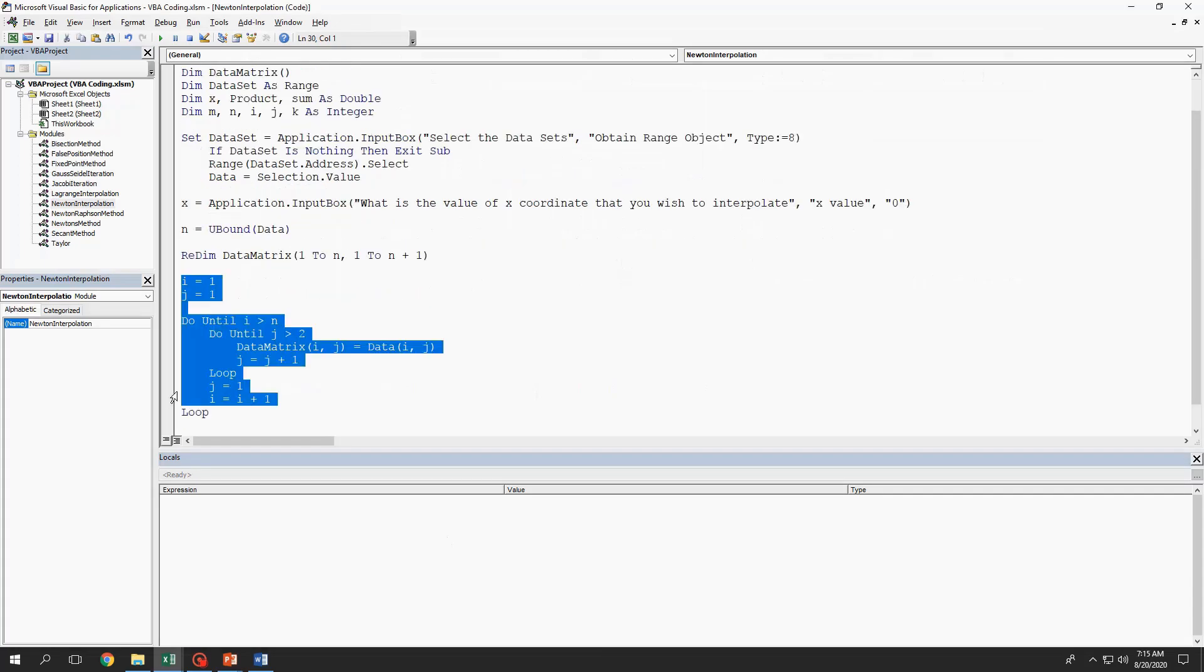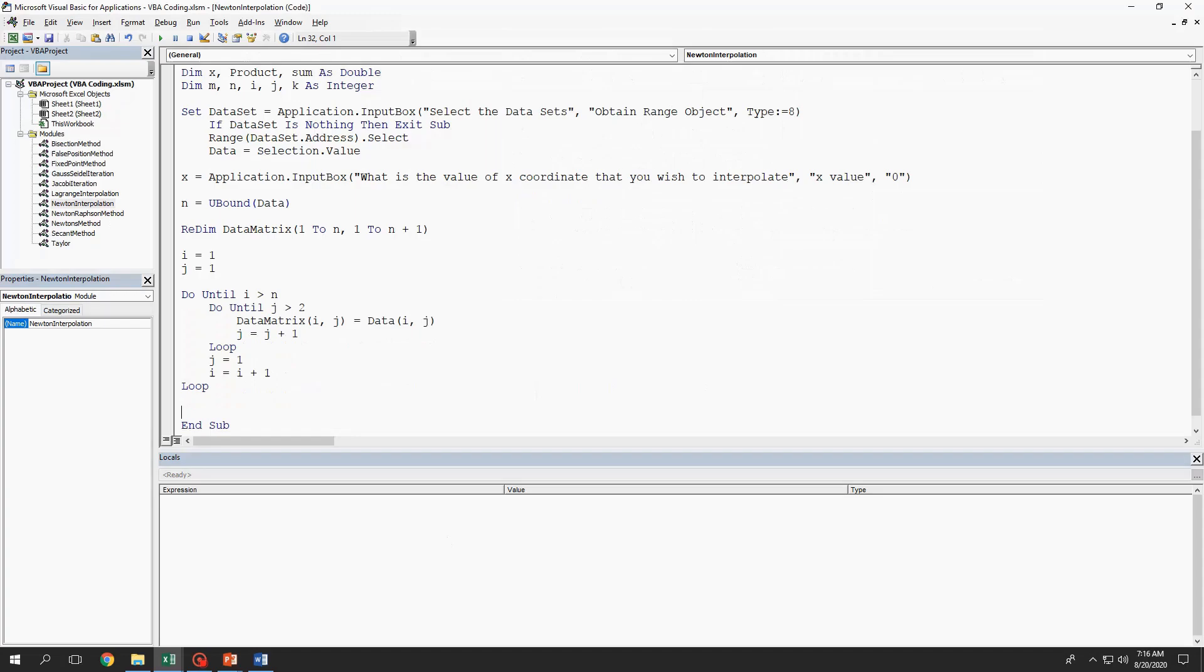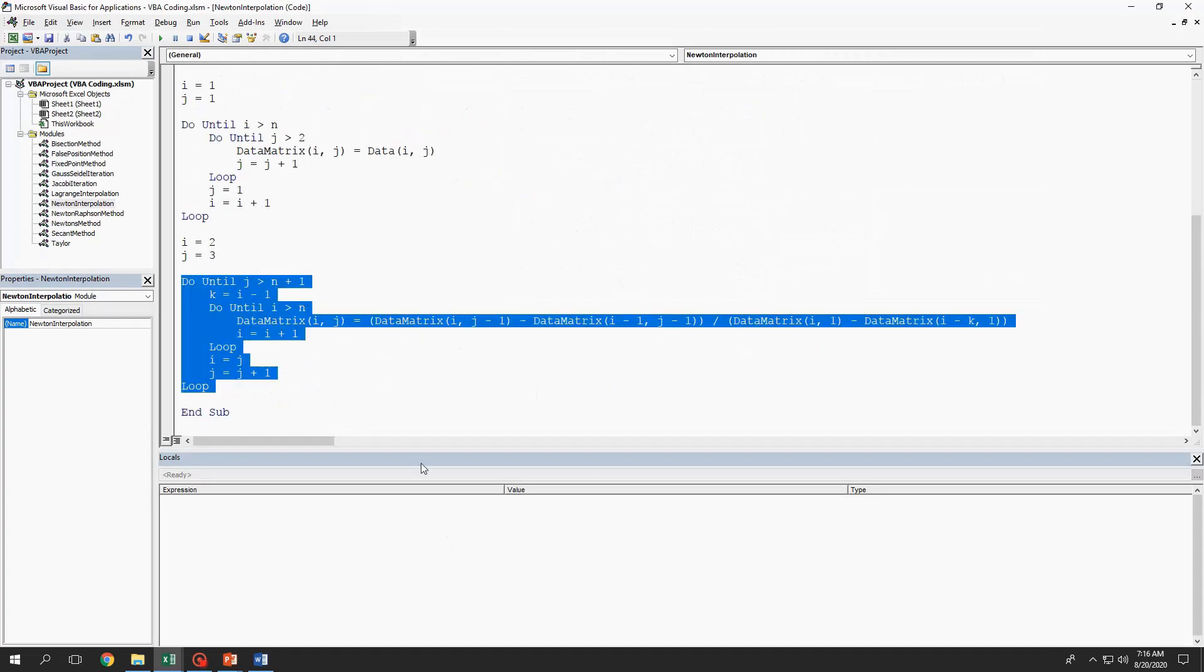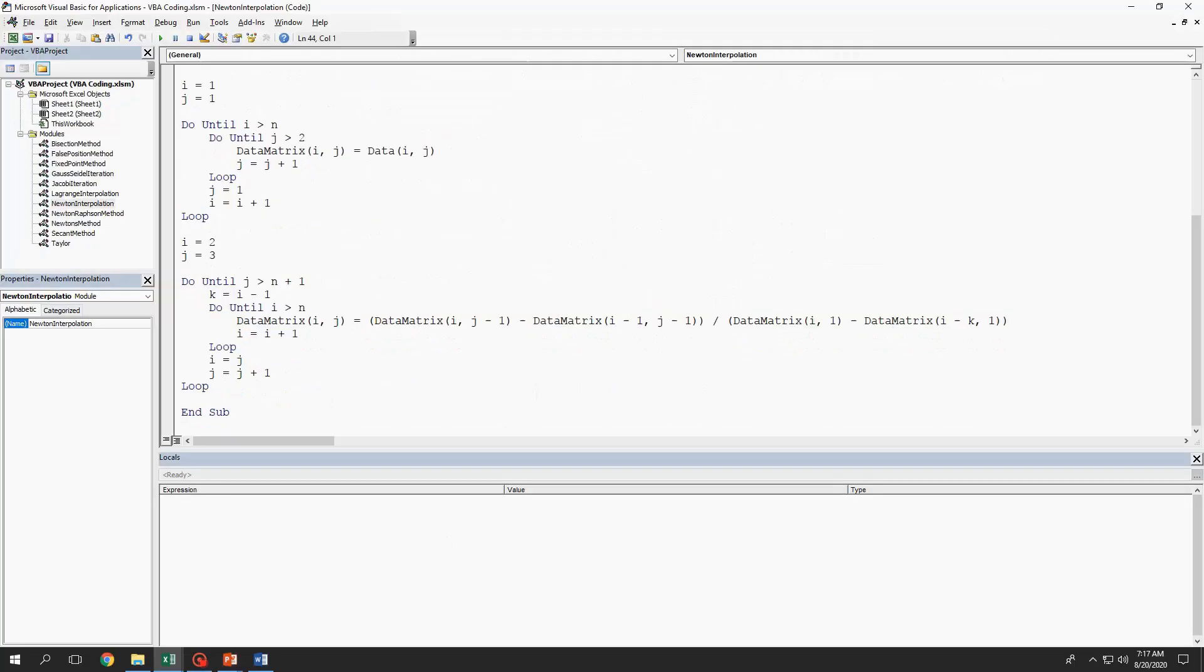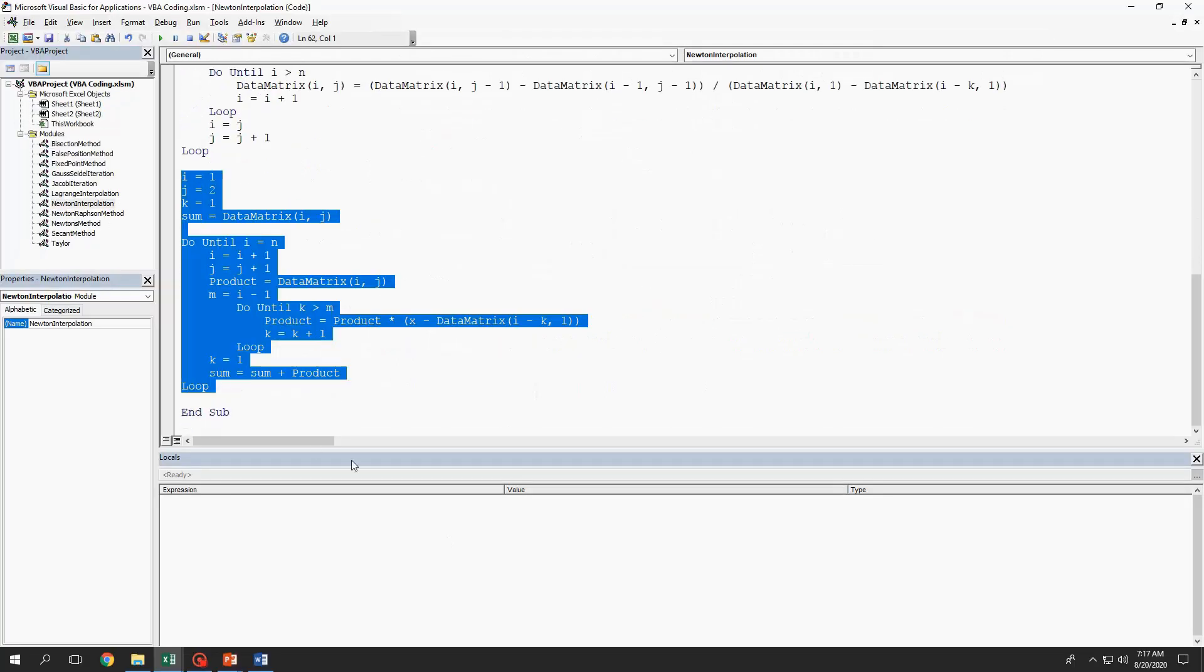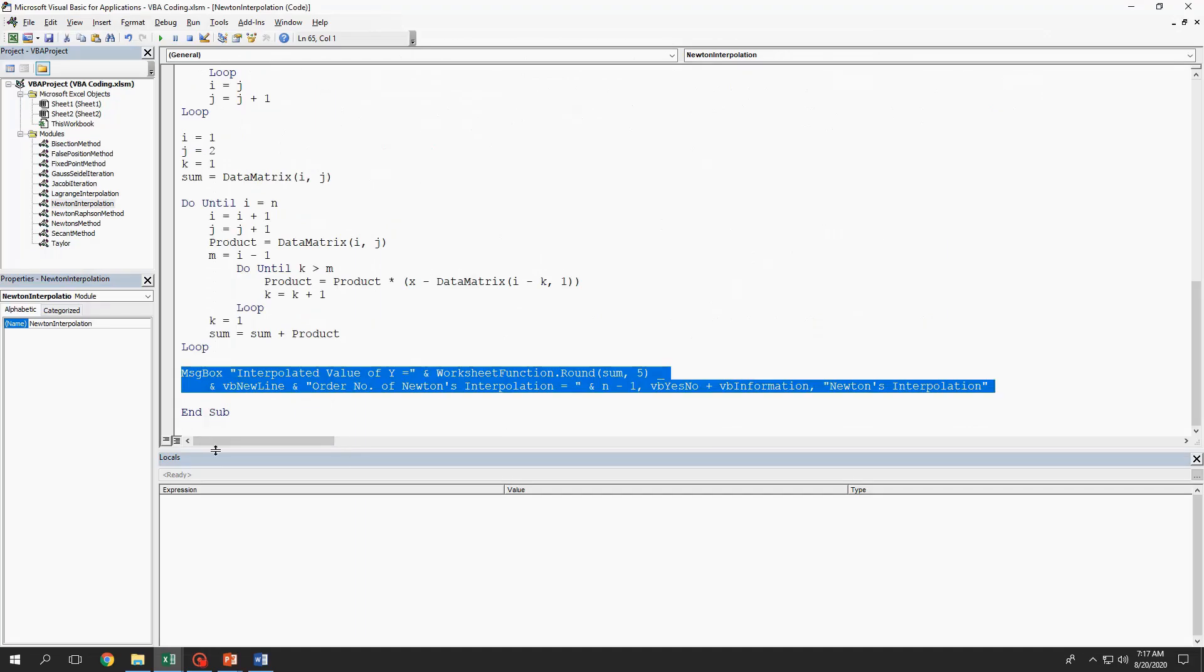Redim to capture this type of table using array inside VBA. These lines will transfer the data points to fill this part of the array while this line of codes will compute the divide difference part of the array. While for this line, it will compute the Newton's polynomial. Again, message box for the output.